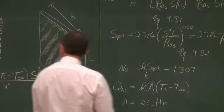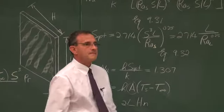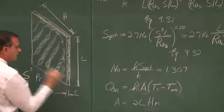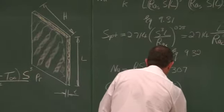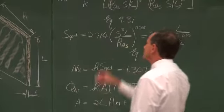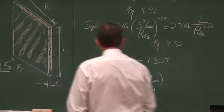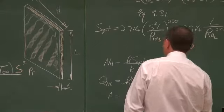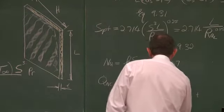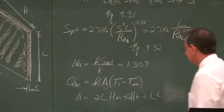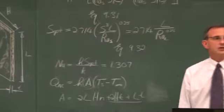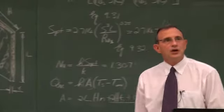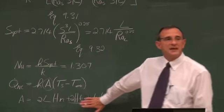Another heat transfer area would be through the tip area. The tip area is equal to H·t plus L·t plus H·t, so it is 2(Ht + Lt). In most cases we would say that that area is negligible.